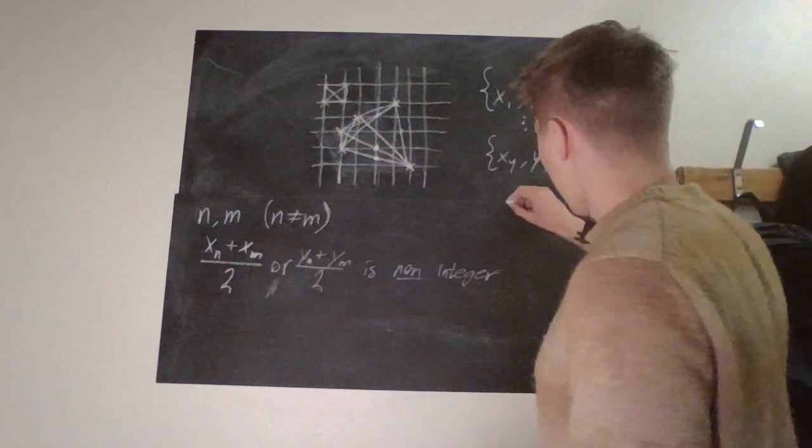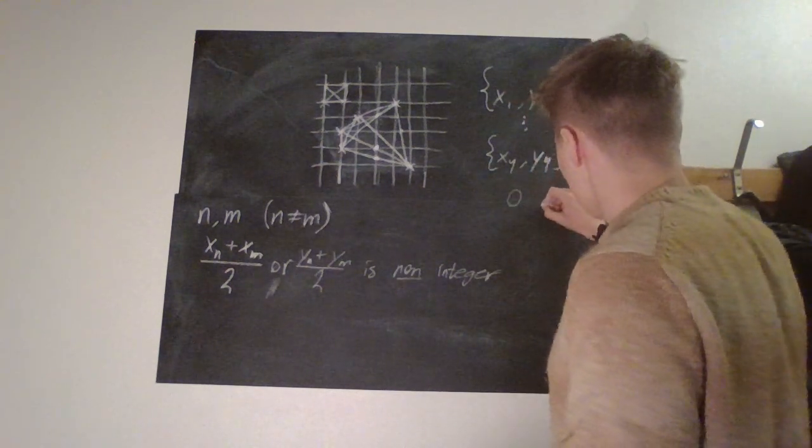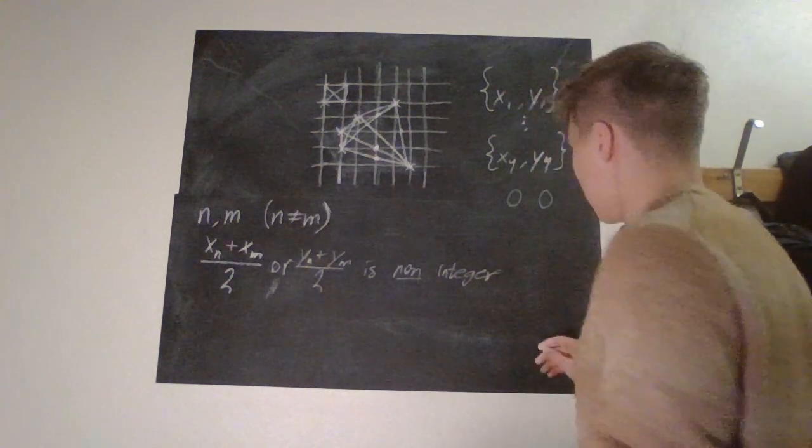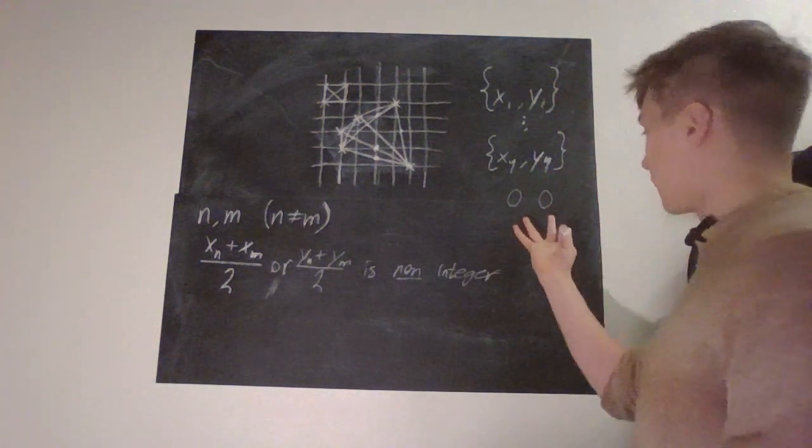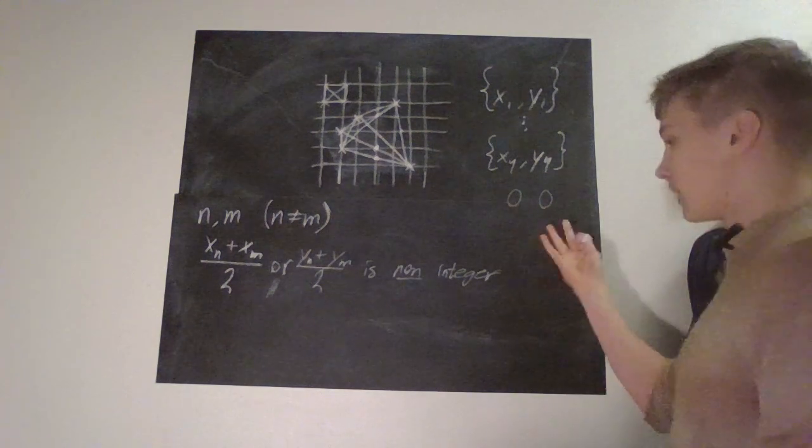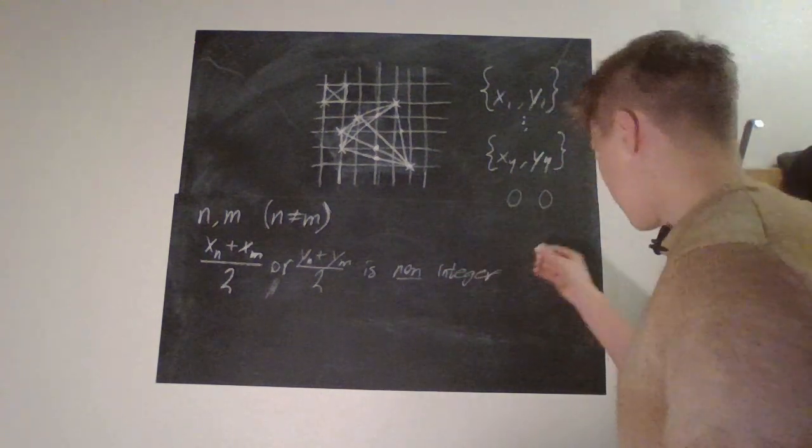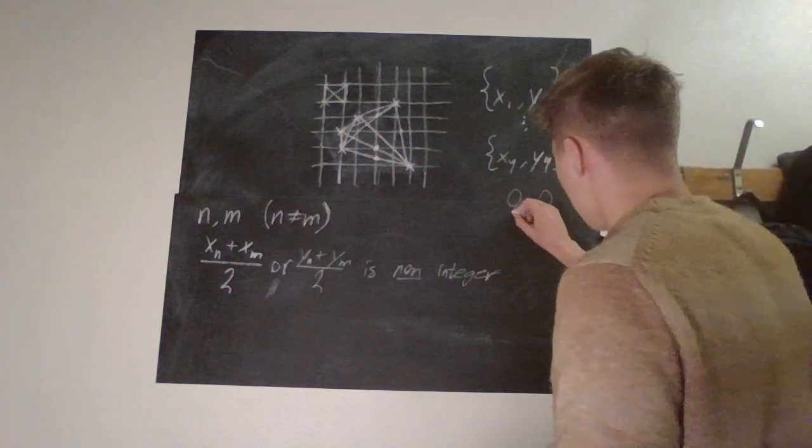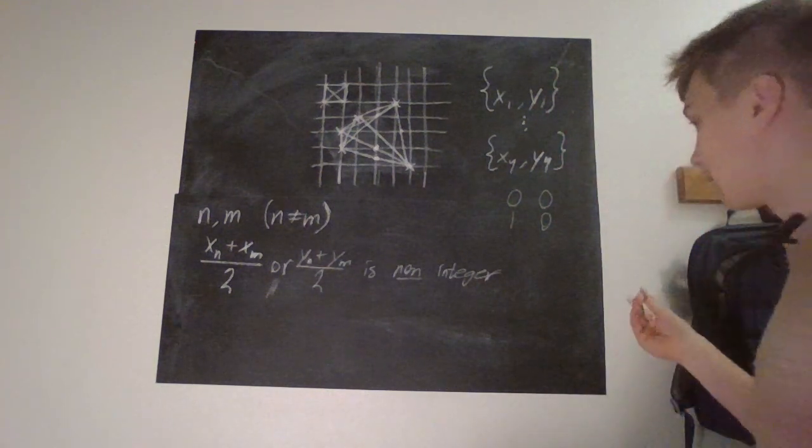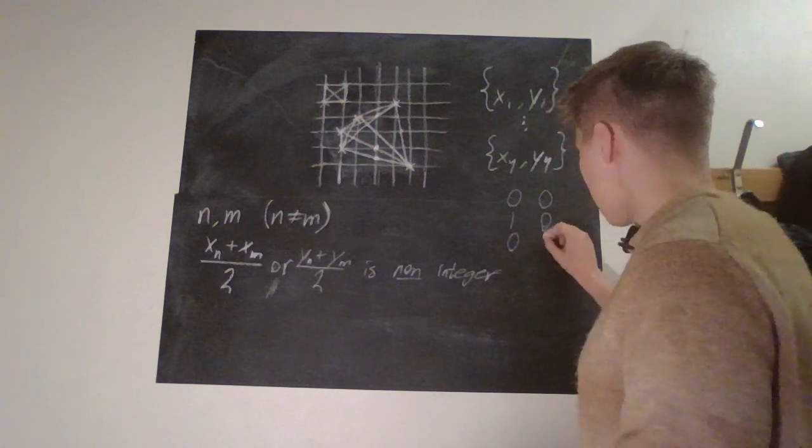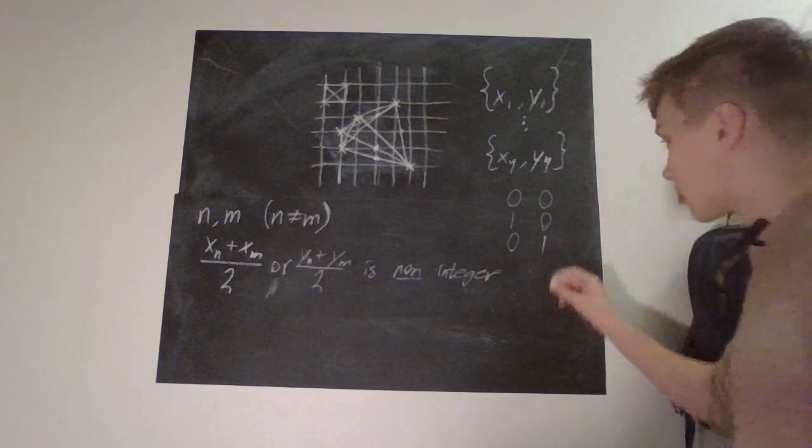Because, okay, if say, okay, if our x1 and y1 are both even, then even if anything else was even-even, then it would obviously yield two integers. So that's not possible, but odd and even that works perfectly fine.